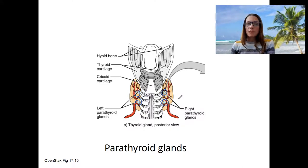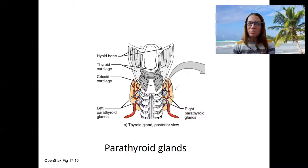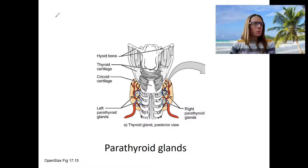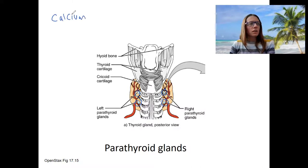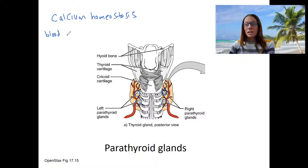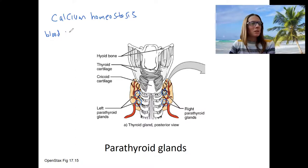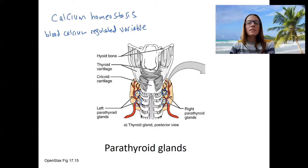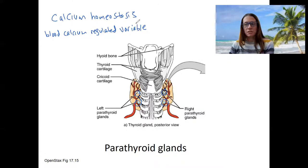We're going to use them as an example of a feedback loop for calcium regulation. Calcium in the blood, blood calcium, is a regulated variable. The amount of calcium in the blood needs to be maintained. That means it can be maintained by negative feedback, right? Because that's how we regulate them. This is going to be regulated by the endocrine system, the parathyroid.